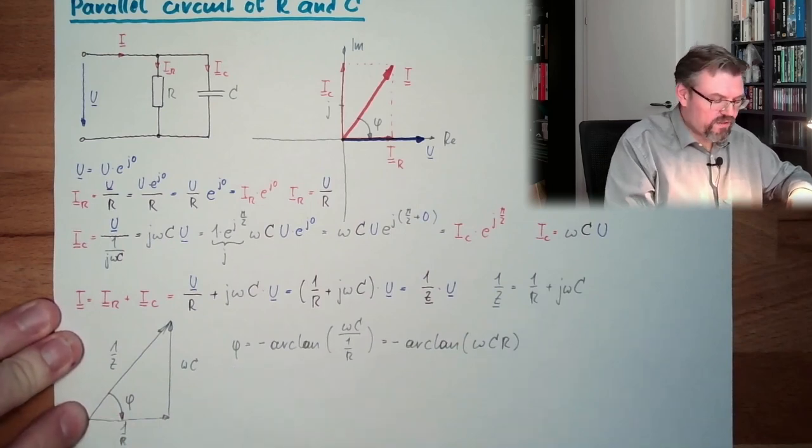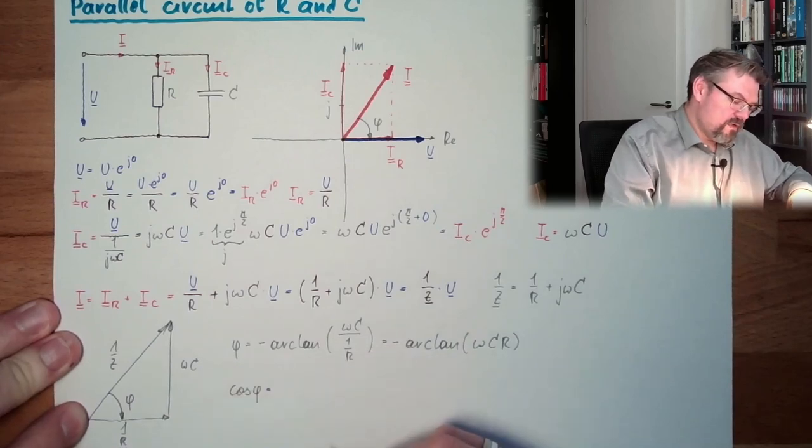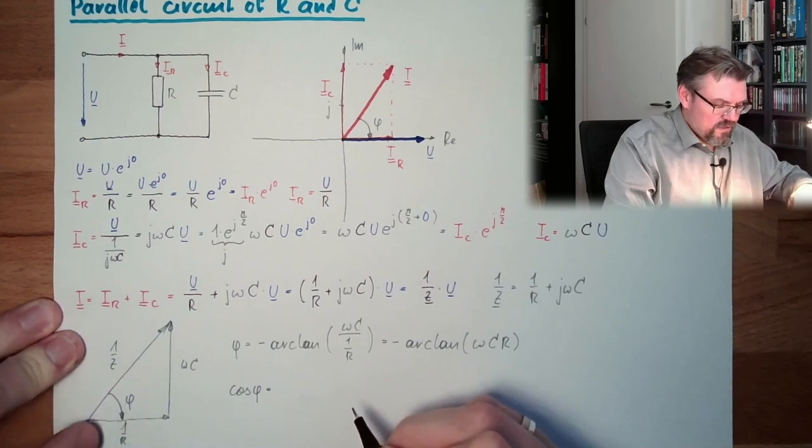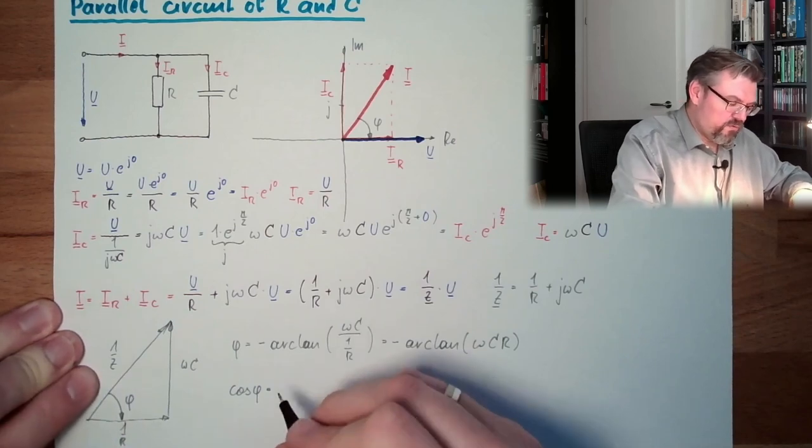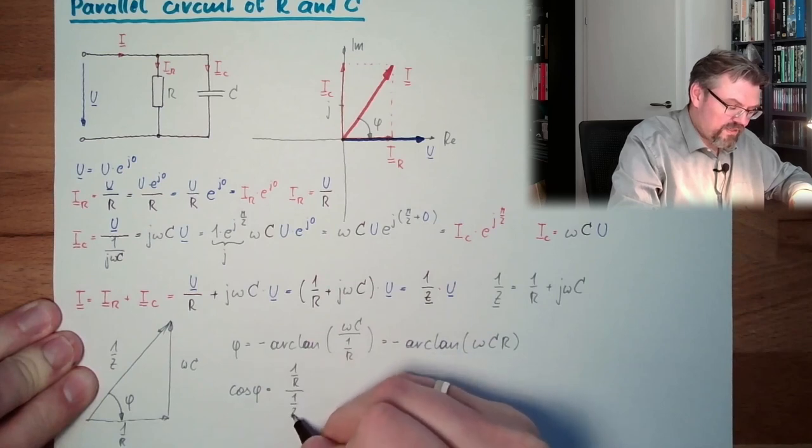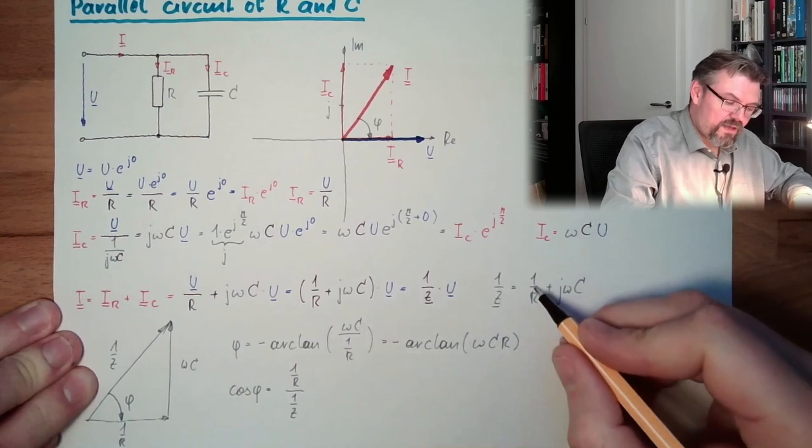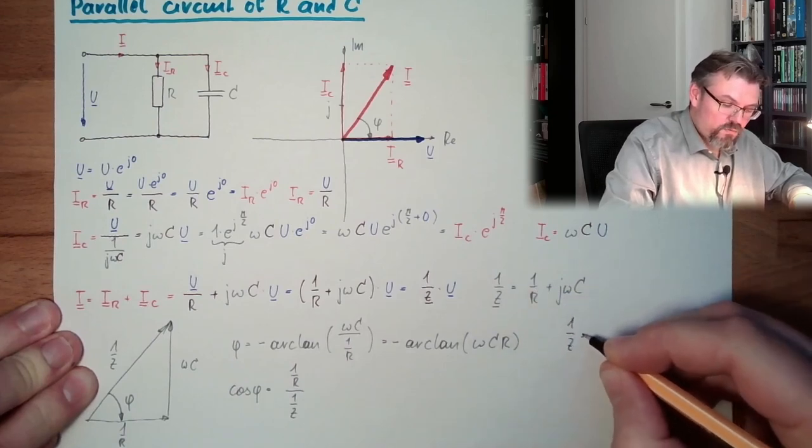Now let's have a look at the power factor. The power factor cos(phi) equals, and this is adjacent divided by hypotenuse. So it's 1 divided by R divided by 1 divided by Z. So the absolute value of 1 divided by Z, the absolute value of this.